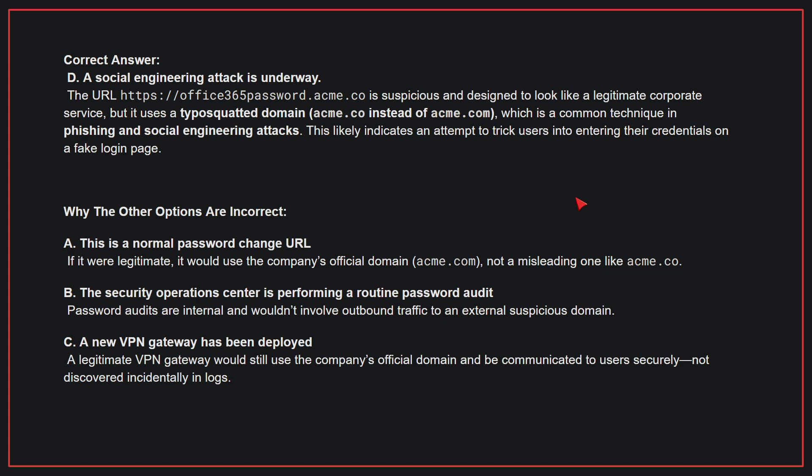Why the other options are incorrect: A. This is a normal password change URL — if it were legitimate, it would use the company's official domain, not a misleading one like acme.co. B. The SOC is performing a routine password audit — password audits are internal and wouldn't involve outbound traffic to an external suspicious domain. C. A new VPN gateway has been deployed — a legitimate VPN gateway would still use the company's official domain and be communicated to users securely, not discovered incidentally in logs.